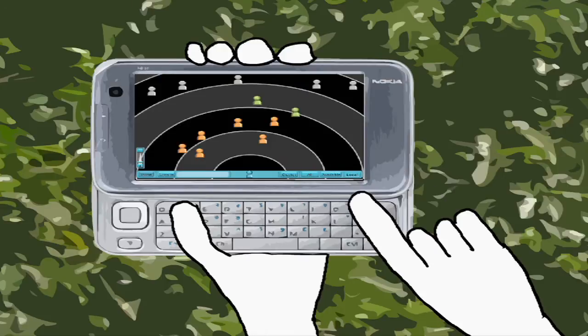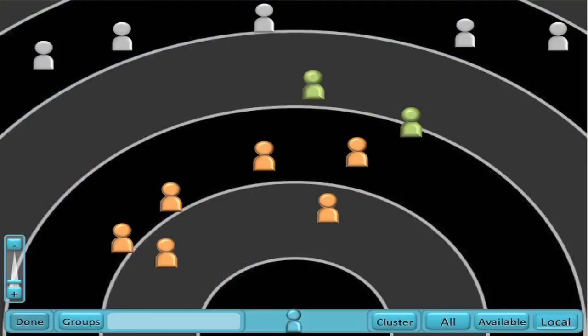The Social Dashboard displays contacts according to physical distance, social distance, levels of trust, and groups. Here are all of the people who have devices within physical sensing distance of Bernardo's mobile phone.